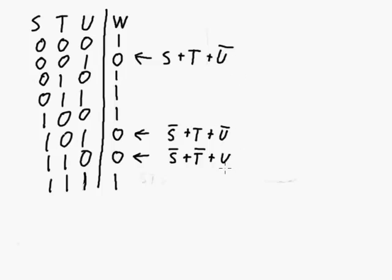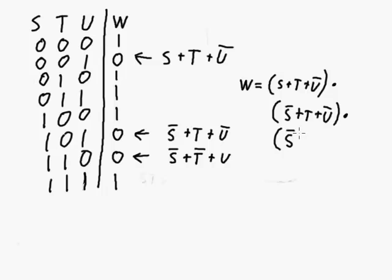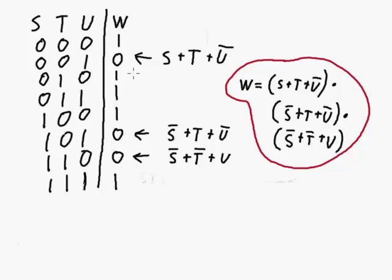And the last step, we take these three sum expressions and we combine them in a product expression and we end up with W is equal to the first expression, S or T or not U, ANDed with the second expression, not S or T or not U, ANDed with the third sum expression, not S or not T or U. So there we have it. Since we had three rows that were zero, we're going to have three sum terms in our expression and each one of those sum terms is ANDed together.